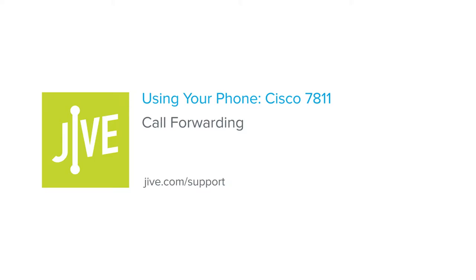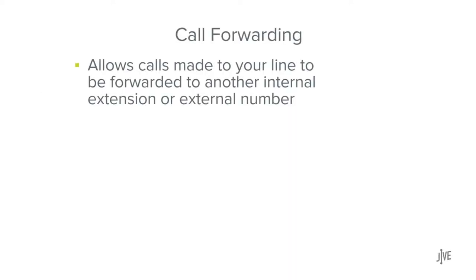In this video, you will learn how to enable and disable call forwarding on a Cisco 7811 phone. Call forwarding allows calls made to your line to be forwarded to another internal extension or external number.